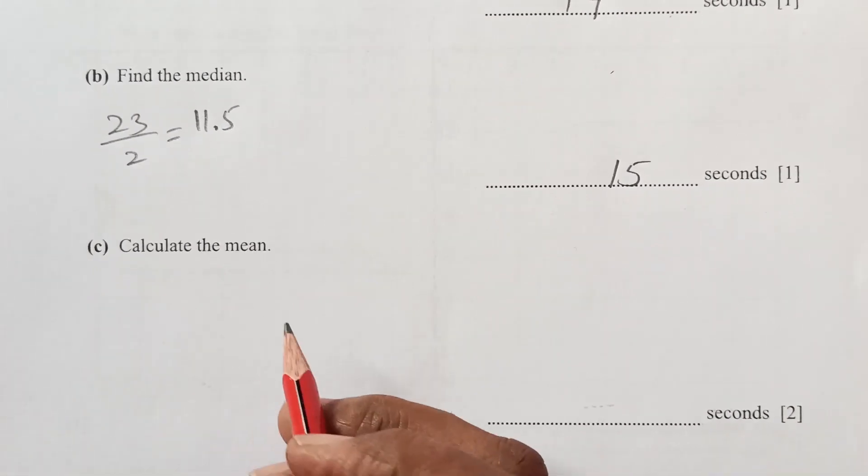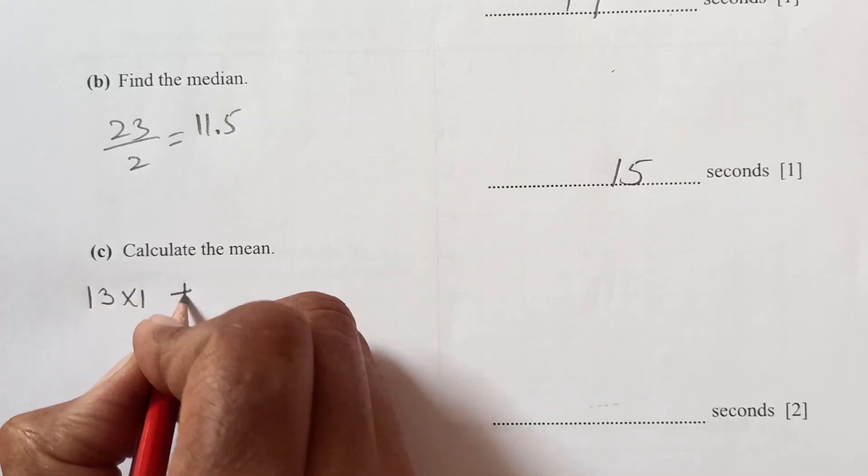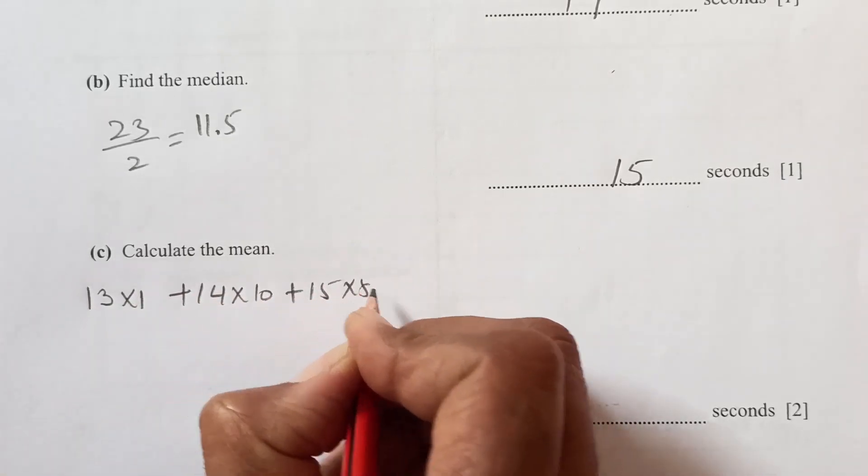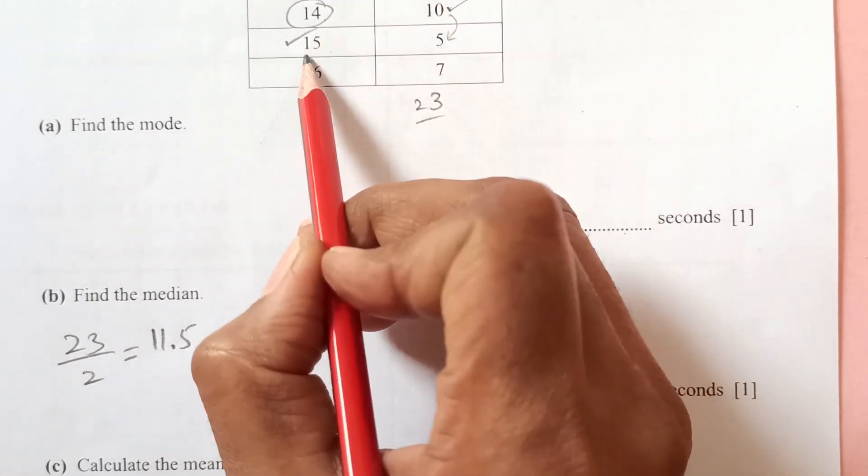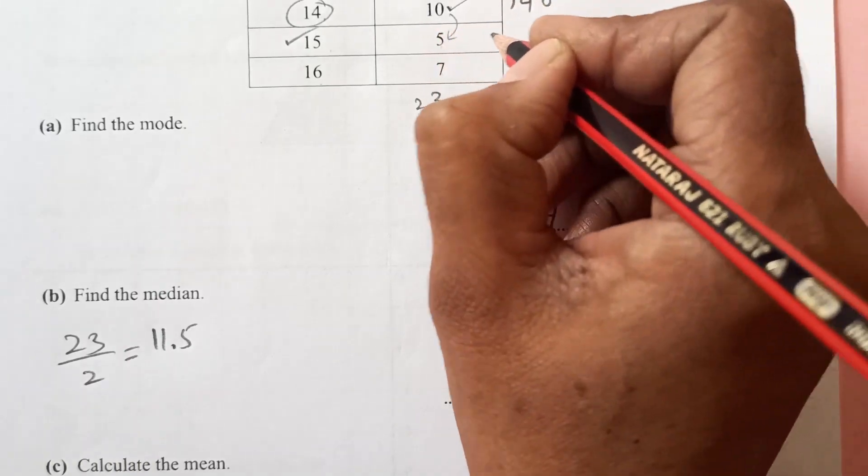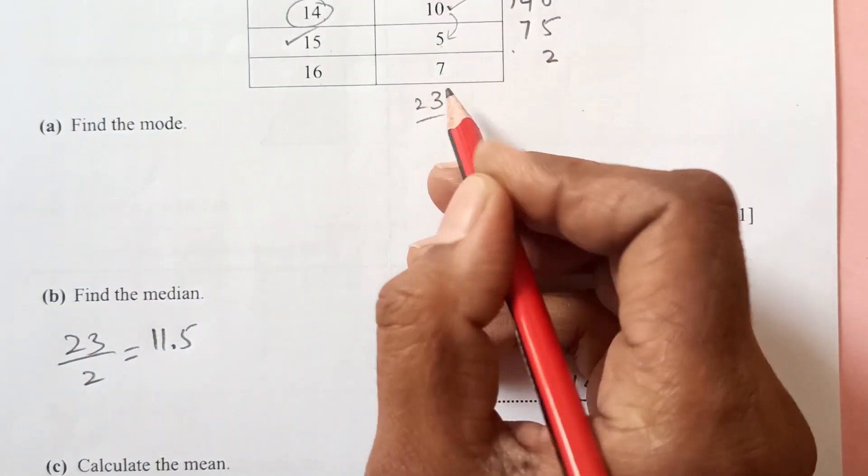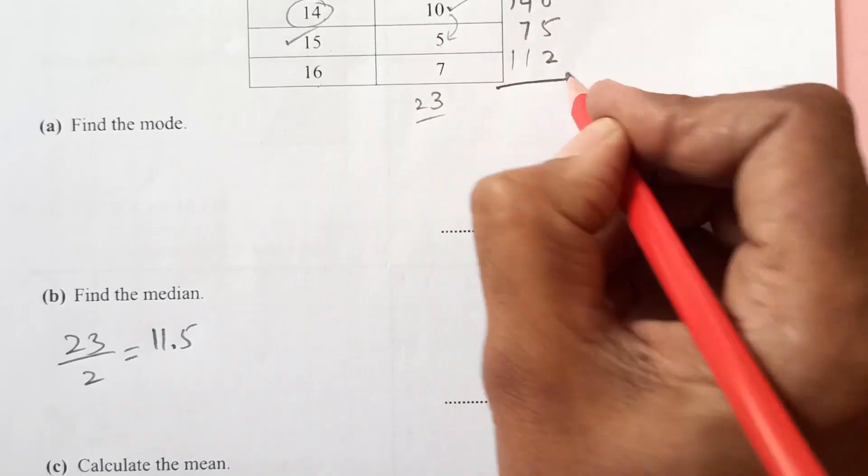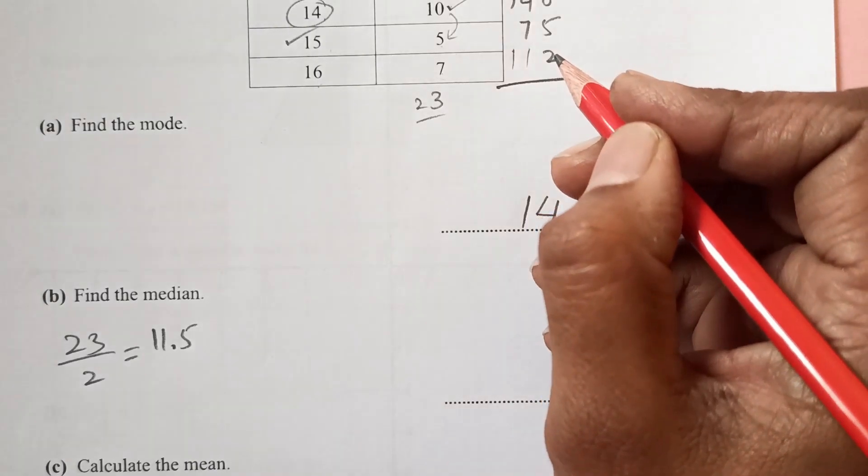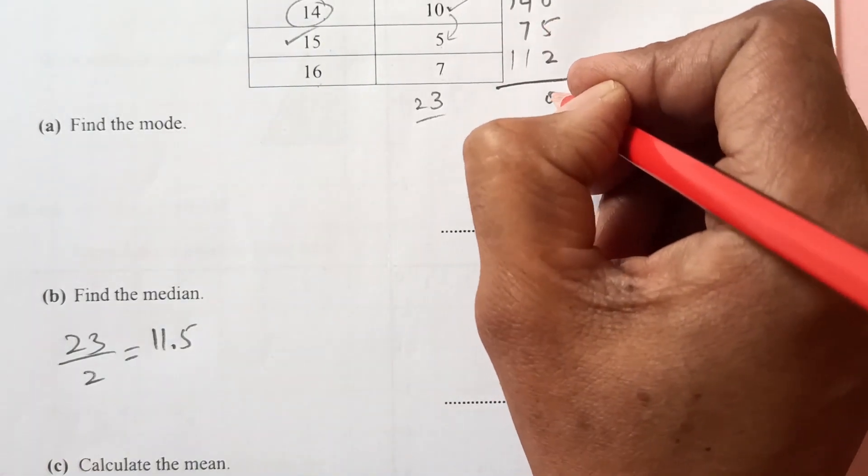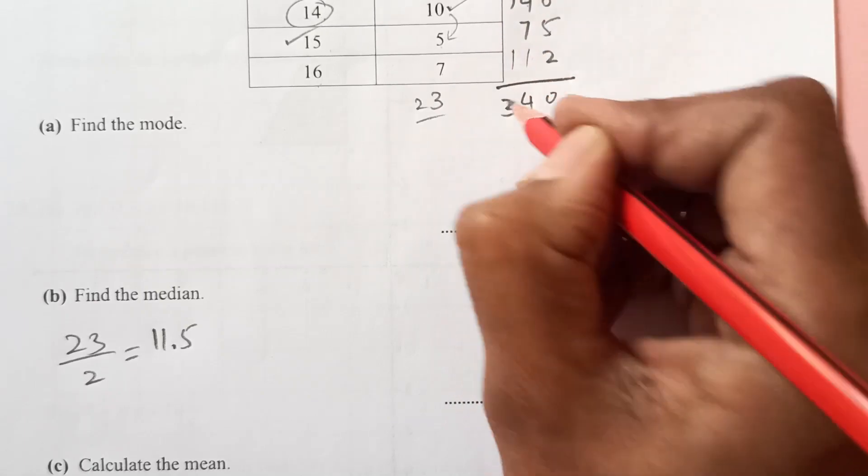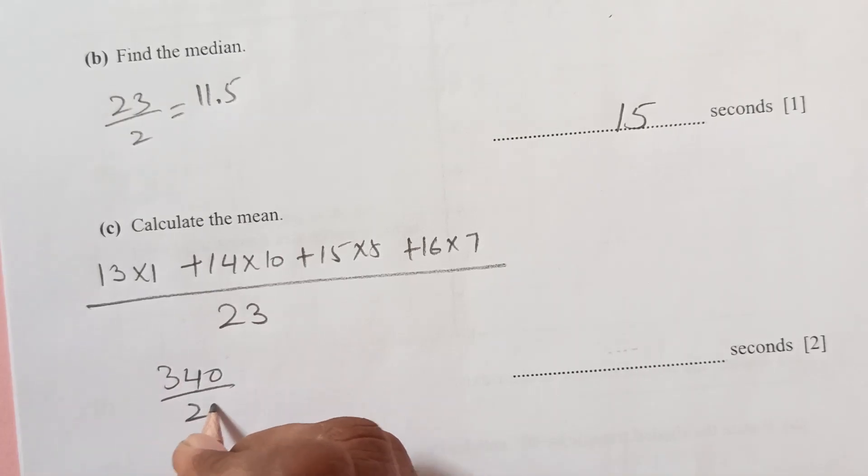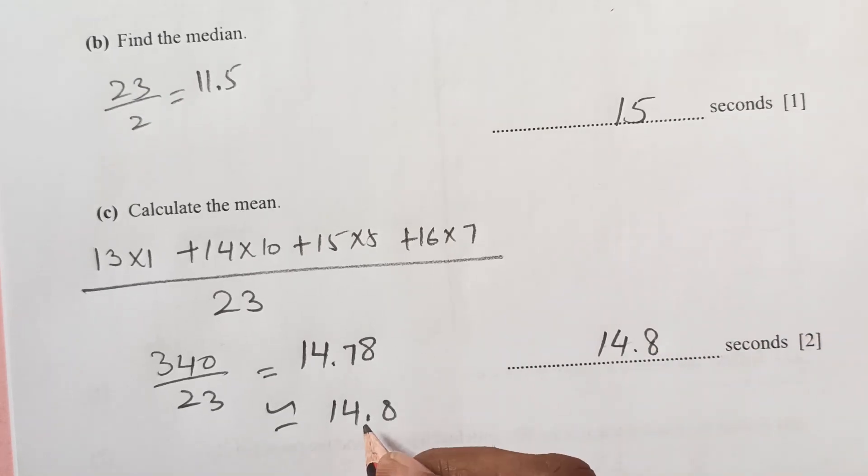Now, calculate the mean. For the mean, we have to multiply: 13 times 1 plus 14 times 10 plus 15 times 5 plus 16 times 7 divided by 23. So here 13 times 1, 14 times 10, 15 times 5. I can write here 13, 140, 15 times 5 is 75, 16 times 7 is 42 plus 70 is 112. When you add this one, we are going to get here 340. So 340 divided by 23, this comes out to be 14.78, approximately 14.8. So we can write down 14.8 as the final answer.